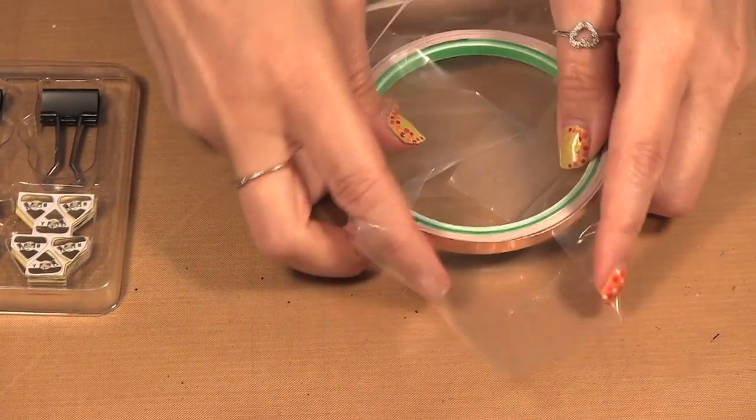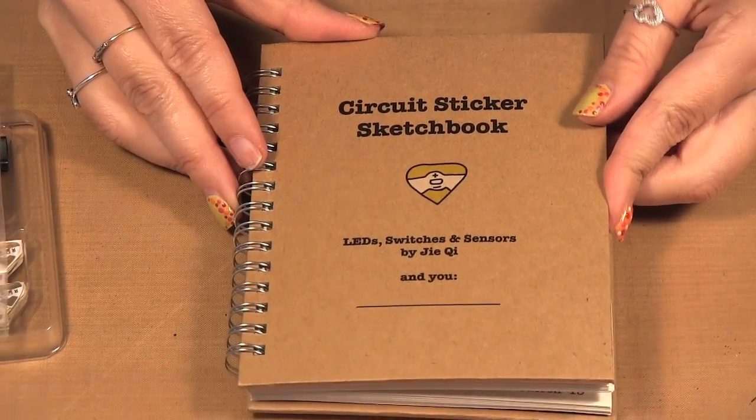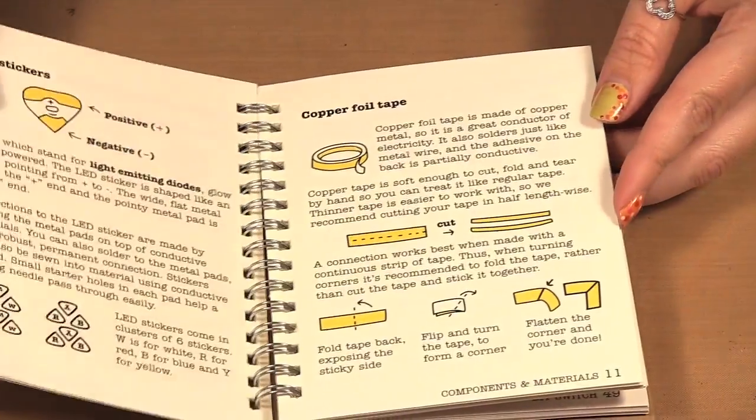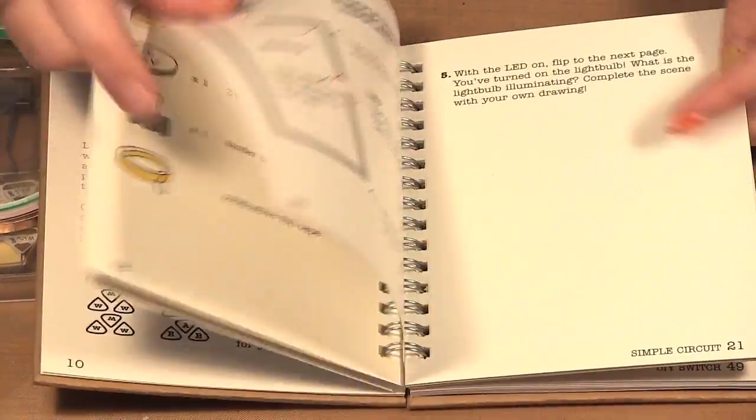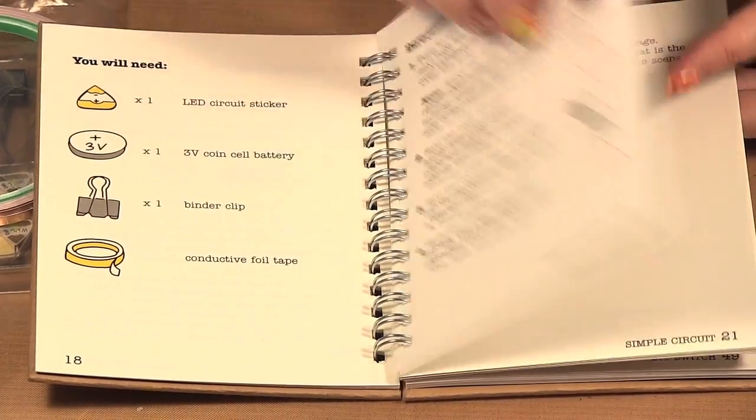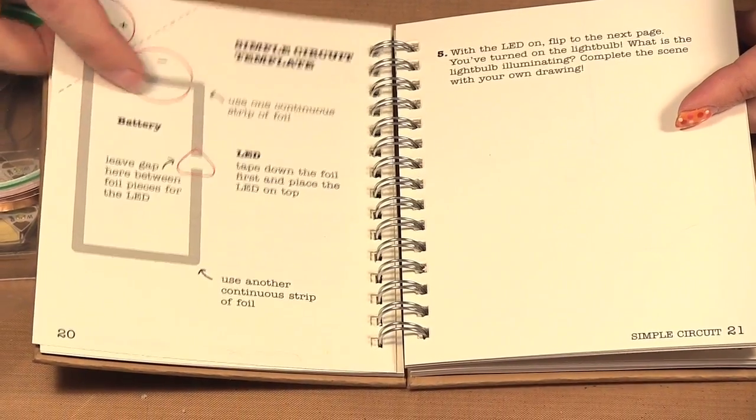You get your copper tape and then most importantly is you get this book, the circuit sticker sketchbook. And what this does, it will walk you through how to set up lights. So it will tell you what you need, the directions,